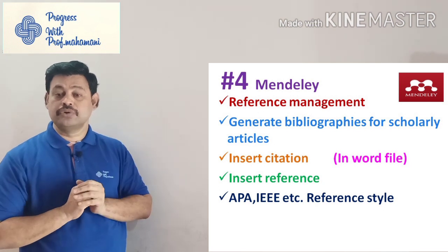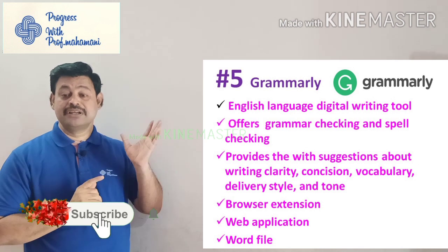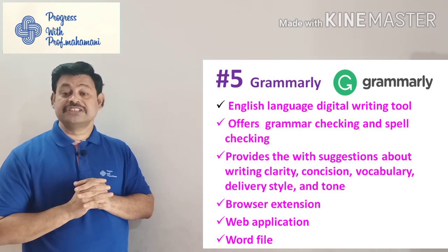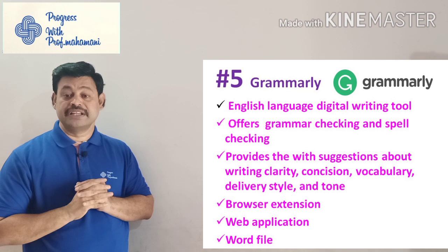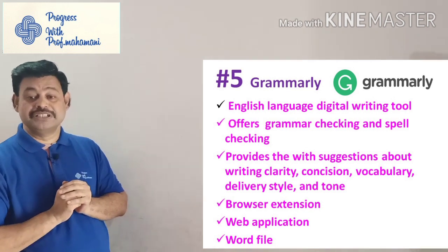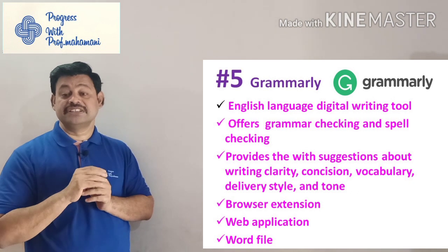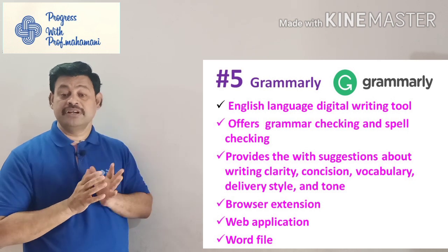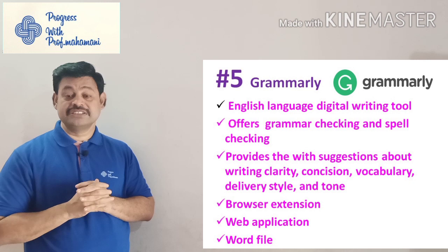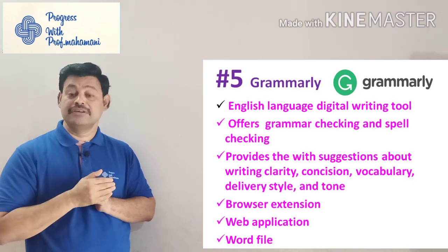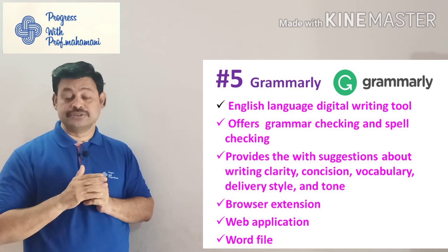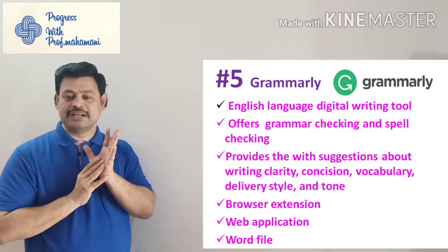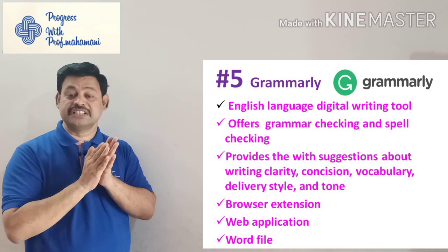The fifth one is Grammarly, one of the most popular software tools for checking grammatical errors. It is an English language digital writing tool offering grammar checking, spell checking, and suggestions about writing clarity, transitions, vocabulary, delivery style, and tone. You can add it as a browser extension for use in email, or add it to MS Office so that while typing in Word, any grammatical error is automatically indicated with a suggestion on how to rewrite it.